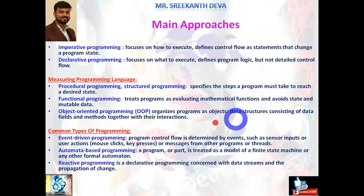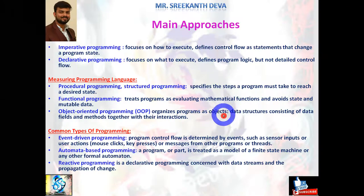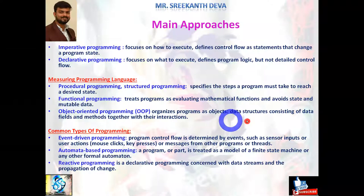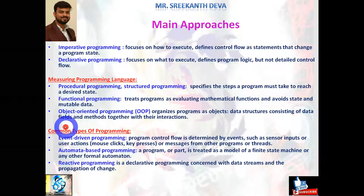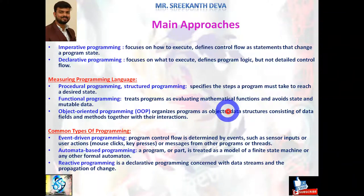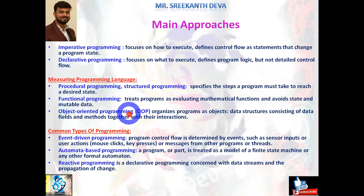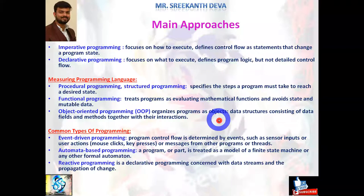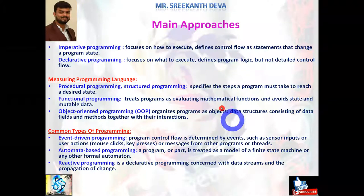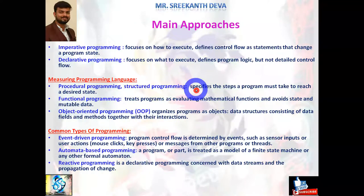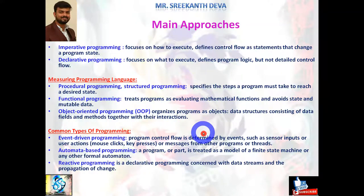In object oriented programming, the program is organized in the form of objects. Everything comes under the form of class and objects — data structures consisting of data fields and methods together with their instructions. Simply remember: all properties and functions are embedded in one entity called an object. We will discuss practically what is an object, the syntax of an object, and how it is used in object oriented programming languages like C++, Java, and .NET.